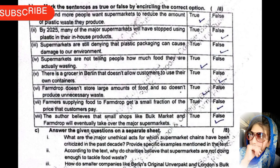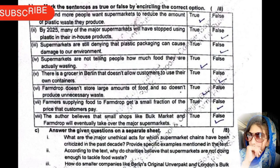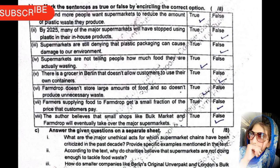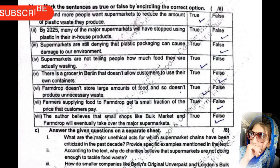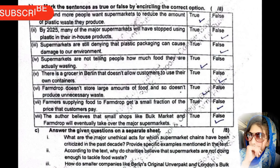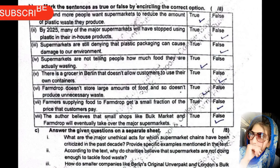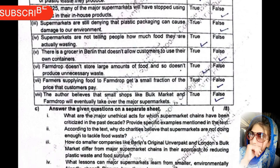Section B: mark the sentence as true or false by selecting the correct option. Number one is true. Number two is false. Number three is false. Number four is true. Number five is false. Number six is true. Number seven is false. Number eight is also false.